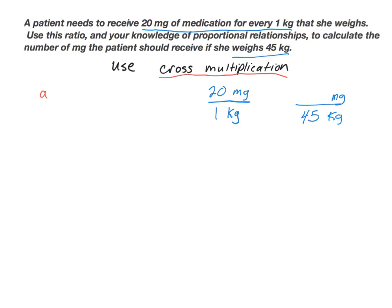Cross multiplication tells us that if we know two ratios are equivalent to one another — A over B equal to C over D — then if we cross multiply, taking A times D, that gives us a product, and B times C gives us another product, and these two products are equivalent. This is going to be true for all equivalent ratios.